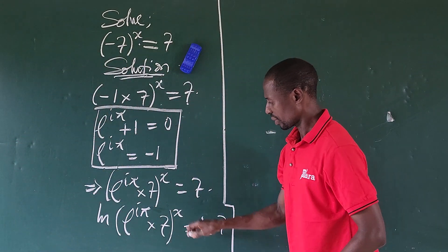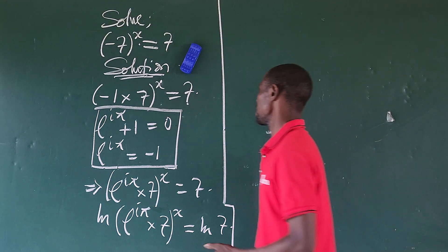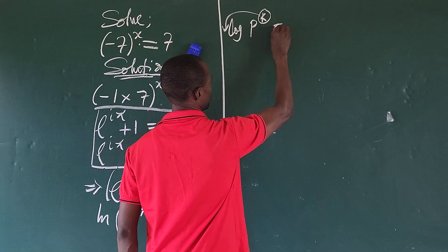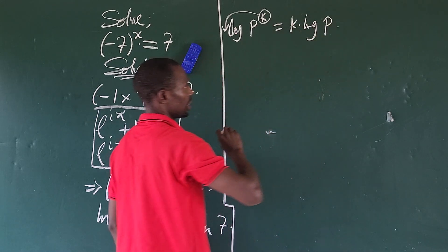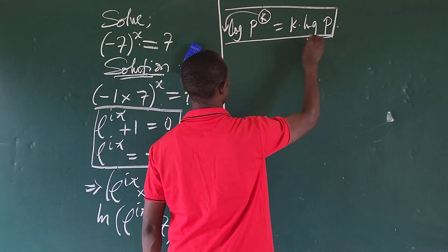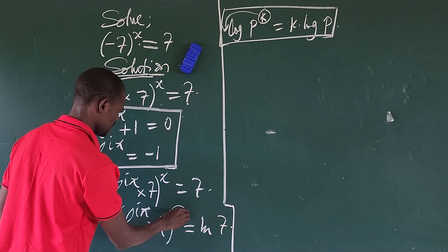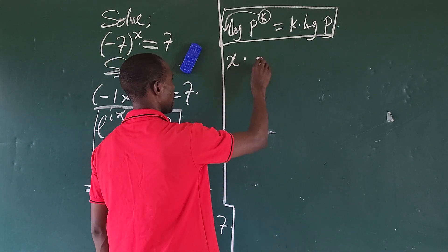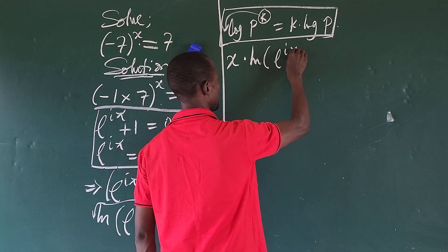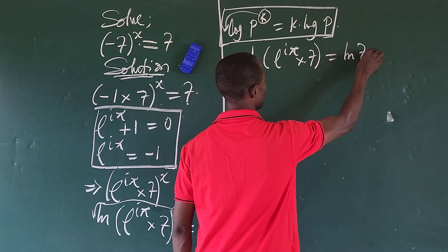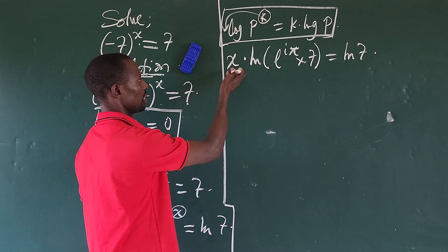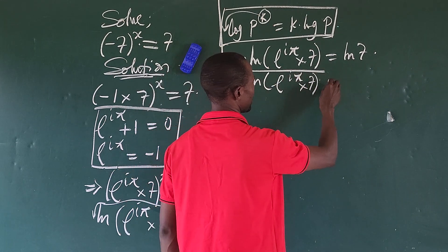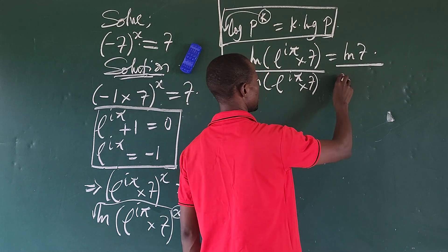Now we apply the power law of logarithm, which says that log of p to the power of k equals k times log of p. Using that law, we bring the entire exponent x down to the front, giving us: x times ln of bracket e^(iπ) times seven, equals ln of seven. To isolate x, we divide both sides by ln of bracket e^(iπ) times seven.